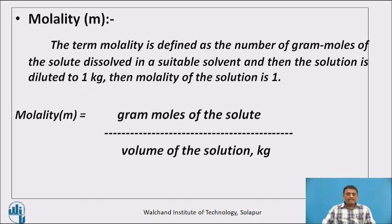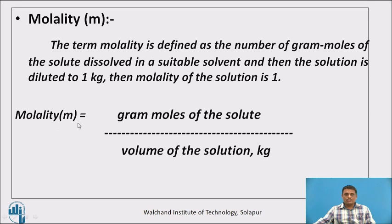Molality is denoted by small m. There is only one difference between molarity and molality: in case of molarity, the volume is measured in litres, and in case of molality, the volume is measured in kg. Molality is defined as the number of gram moles of the solute dissolved in a suitable solvent and then the solution is made up to 1 kg. In case of normality and molarity the volume is 1 litre, but in case of molality it is 1 kg. Molality m equals gram moles of the solute divided by volume of solution in kg.